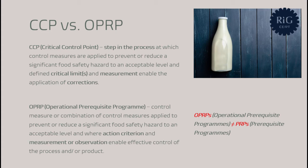The question is how an organization implementing a food safety management system will decide where it should have a CCP and where hazards should be controlled with OPRPs. ISO 22000 does not provide details for how to establish a decision process — it would have helped if it did. Let's take a look at the definitions again, starting with the CCP.